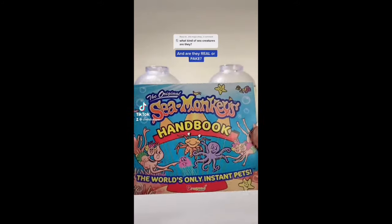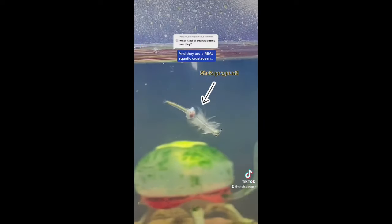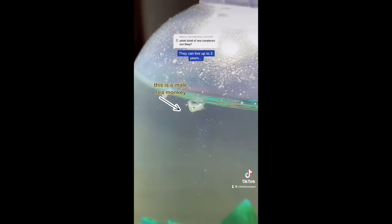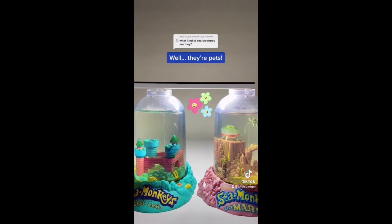So what exactly are sea monkeys and are they real or fake? Well, sea monkeys are an artificial hybrid breed of brine shrimp and they are a real aquatic crustacean. If cared for correctly they can live up to two years and the purpose of them, well, they're pets.